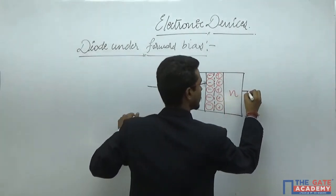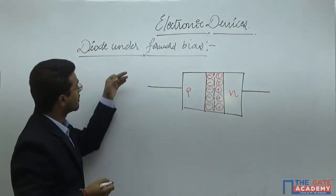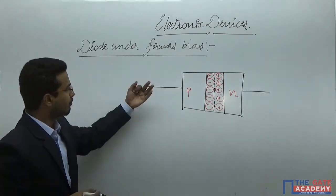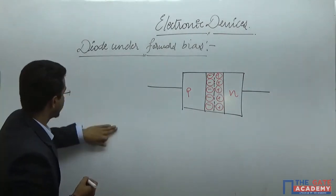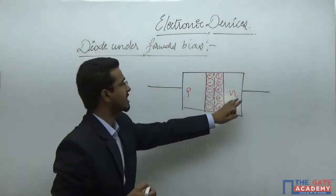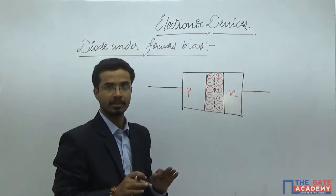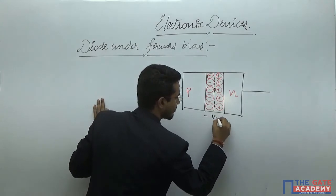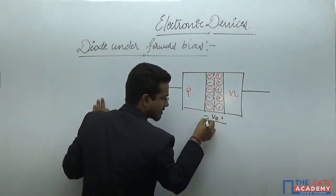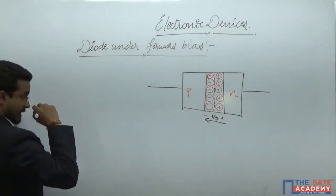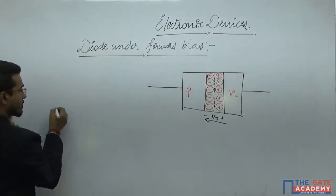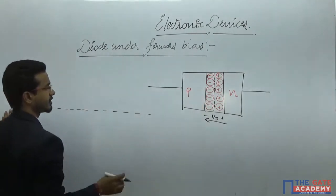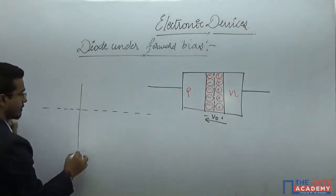In today's class we will discuss forward bias. But before that, I will draw the energy band diagram of this P-N junction diode under equilibrium condition. The voltage here is V0 and the electric field direction is shown. Let me draw the energy band diagram of this P-N junction diode under the equilibrium case.